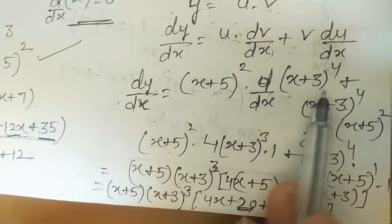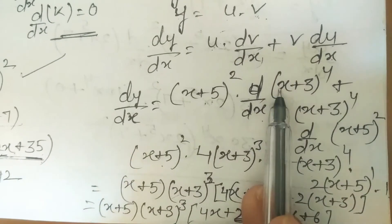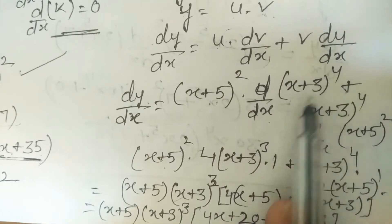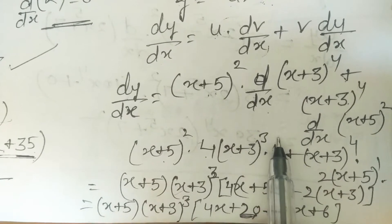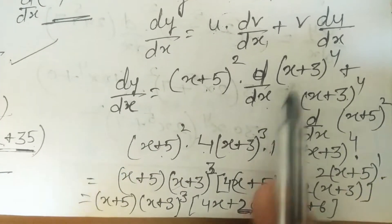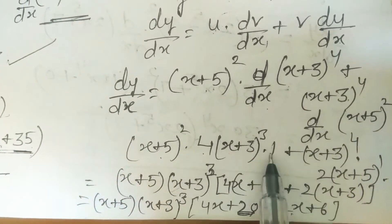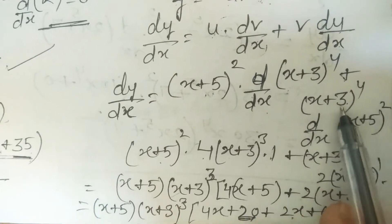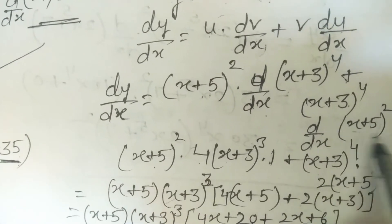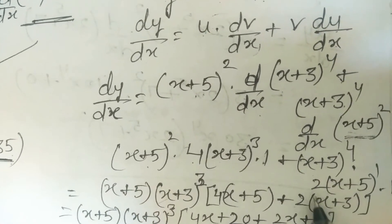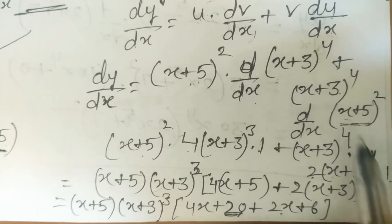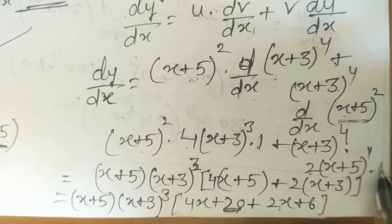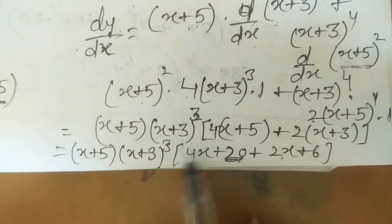Applying the (ax+b)^n formula: derivative of (x+3)^4 is 4·(x+3)^3·1, and derivative of (x+5)² is 2·(x+5)^1·1. So we get: (x+5)²·4(x+3)³ + (x+3)^4·2(x+5).